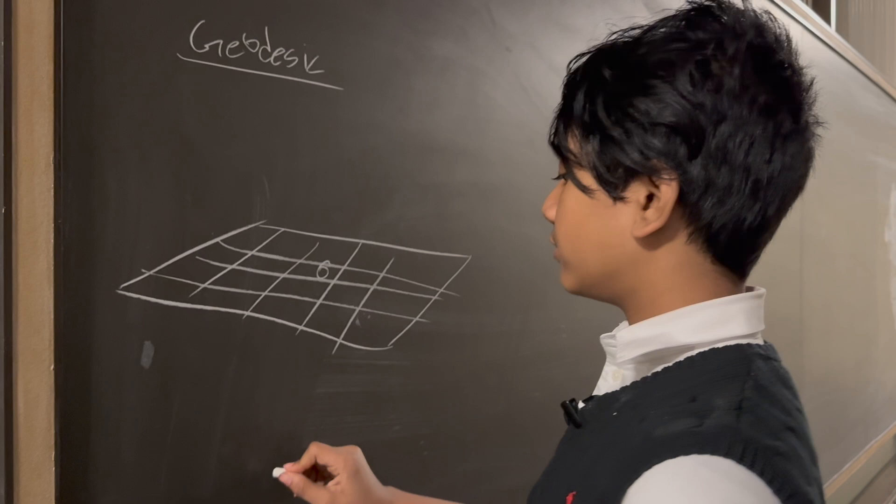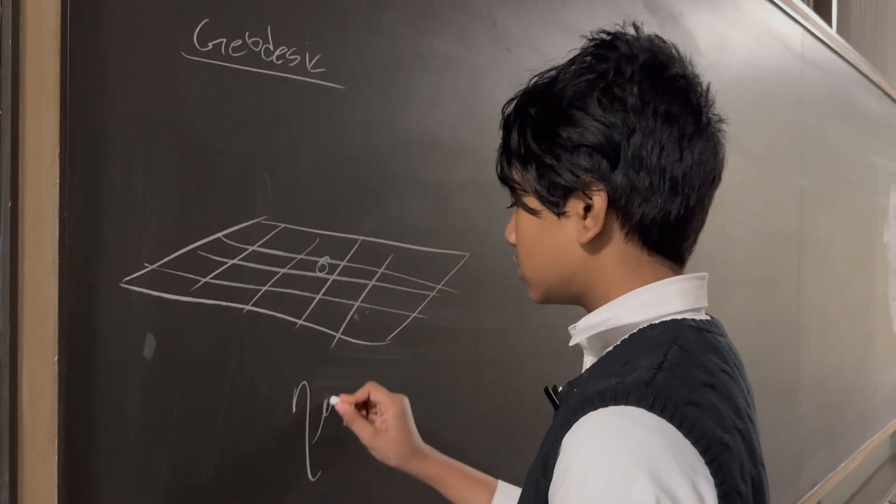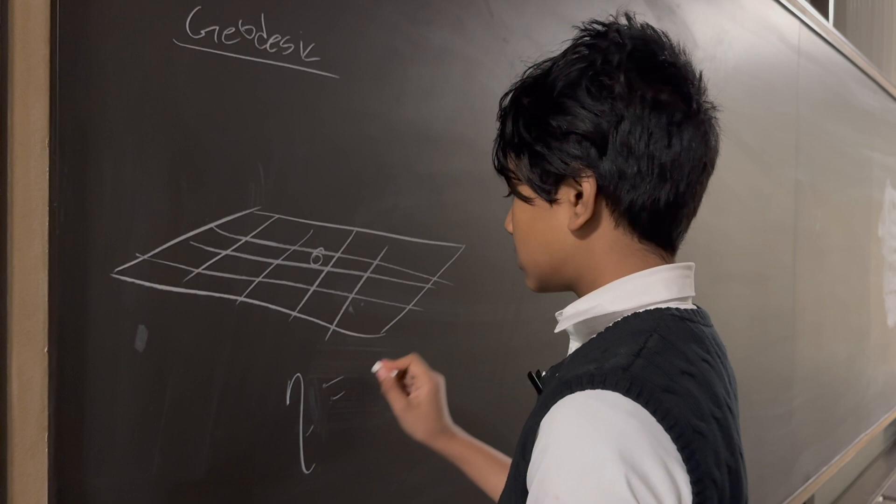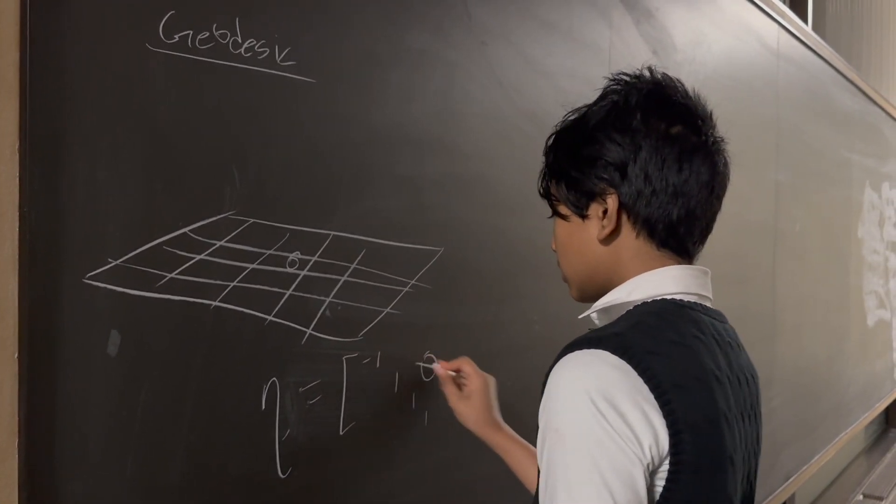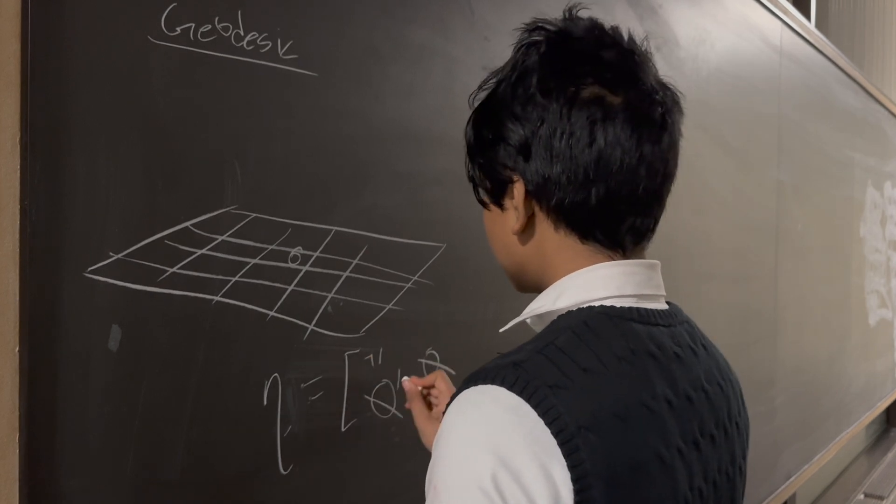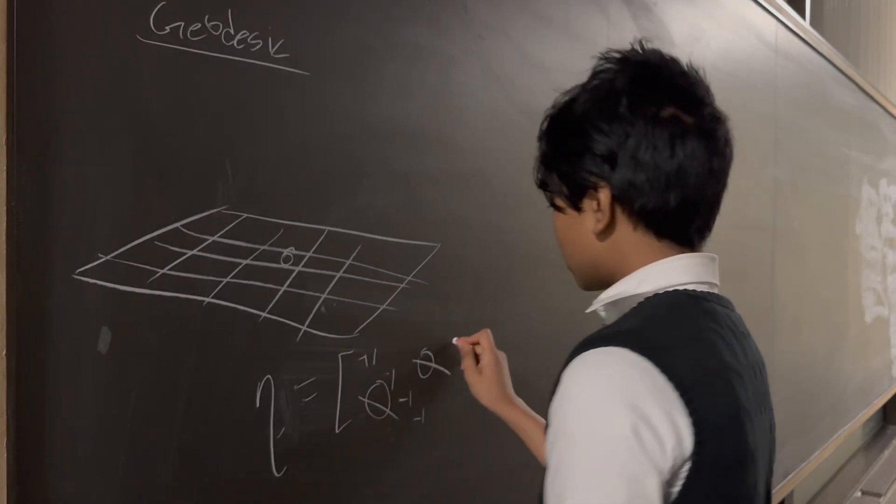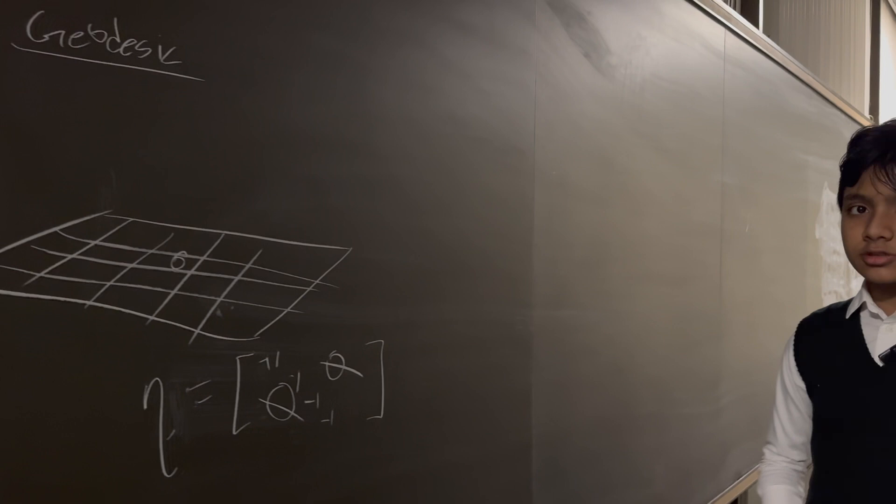So we have a constant, really nice-looking metric tensor, which is just eta equal to minus 1, 1, 1, 1. Or you can change the signs depending on what you use. It doesn't really change the results of relativity.